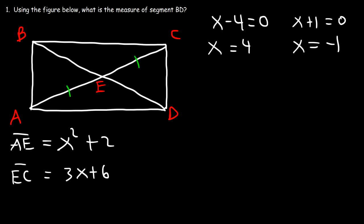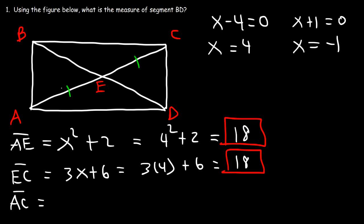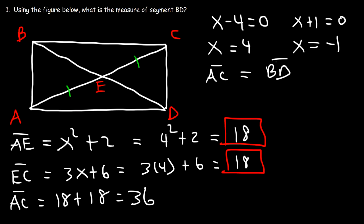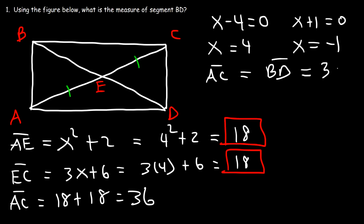Using x equals 4: AE is 4 squared plus 2, which is 16 plus 2 equals 18. EC is 3 times 4 plus 6, which is 12 plus 6, also 18. So AC equals AE plus EC, which is 18 plus 18 equals 36. Since the diagonals of a rectangle are congruent, BD equals AC, so BD equals 36.